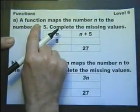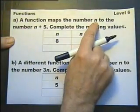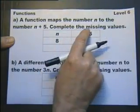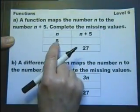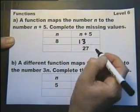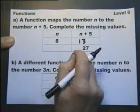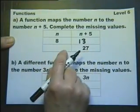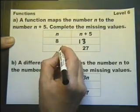Functions. A function maps the number N to the number N plus 5. Complete the missing values. So if N is 8, N plus 5 must be 8 plus 5, which is 13. Working back the other way, if N plus 5 is 27, N itself must be 27 take away 5.